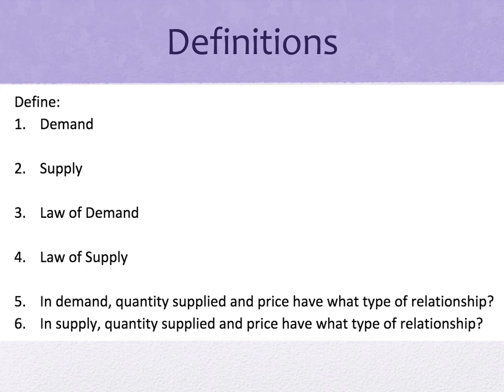Number three: the law of demand says as the price of a good or service increases, the quantity demanded decreases, and as the price drops, quantity demanded rises. Number four: the law of supply says suppliers will normally offer more for sale at high prices and less for sale at low prices. This makes sense — if you sell more at higher prices you make more money.